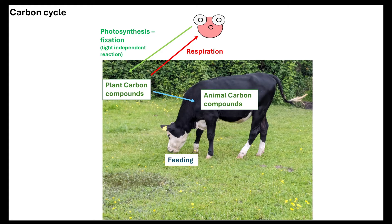If we have plants as our producers and a consumer — for example a cow — that consumer feeds on the plant material. Those carbon compounds are going to be broken down and assimilated into animal carbon compounds. Through that process of feeding, the animal digests and assimilates the plant carbon into their own carbon compounds, and also releases carbon dioxide into the atmosphere through respiration.